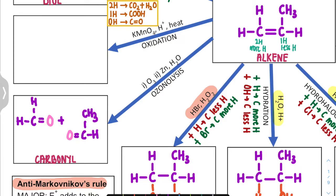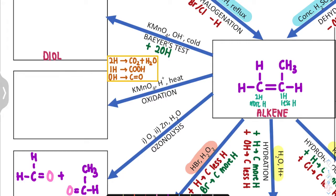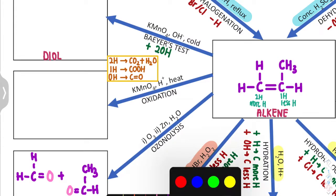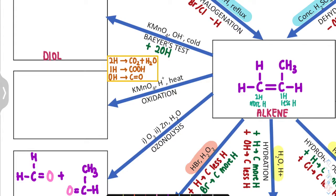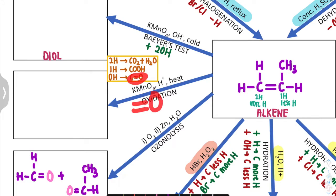Next is KMnO4, H+, and heat — this is oxidation. Oxidation is not as straightforward as ozonolysis and has requirements. For an alkene carbon: if it has 2 hydrogens, that carbon will change to CO2 and H2O. If it has 1 hydrogen, we add a double bond O and the hydrogen becomes OH — giving a carboxylic acid (COOH). If it has 0 hydrogens, same as ozonolysis — just add a double bond O (ketone).